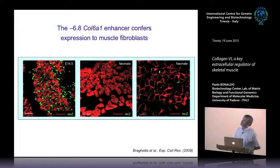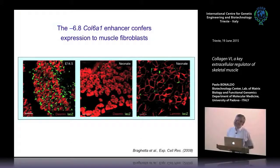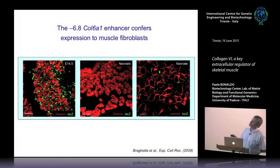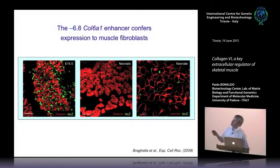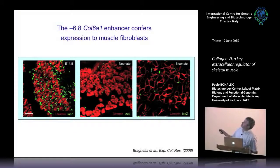There is a specific enhancer — called the Col6A1 enhancer — about seven kilobases upstream of the transcription start site that confers specific expression in muscle. But importantly, it drives expression in fibroblasts, not in myogenic cells. This is shown in transgenic mice where this enhancer drives lacZ: the labeled nuclei are found outside of myogenic cells and muscle fibers, corresponding to fibroblasts — you can see the staining is outside of laminin.